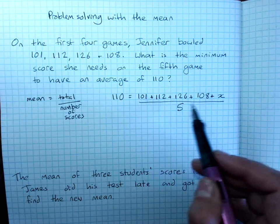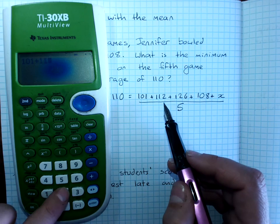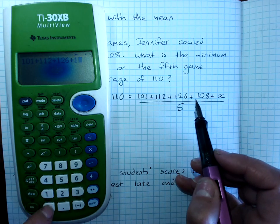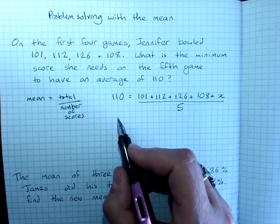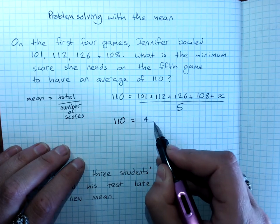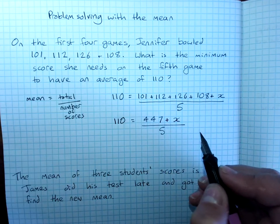Now, we could get away without showing all this working and we could add that up on the calculator. So, she's got a total of 447 at the moment. 110 equals 447 plus whatever she gets divided by 5.